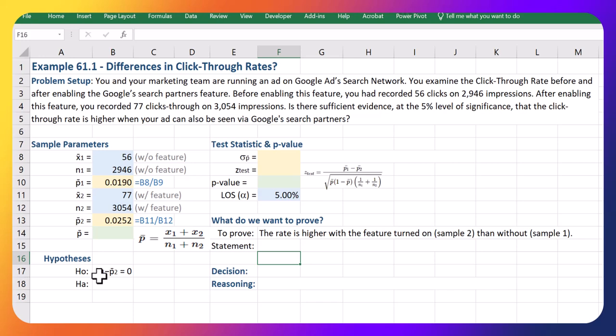We're assuming that there is no difference before and after this feature is turned on, that there is no difference between the true proportions for the two populations. If that were the case, if there truly were no difference between them, that's our null—that's what we assume to be true and then attempt to disprove it.